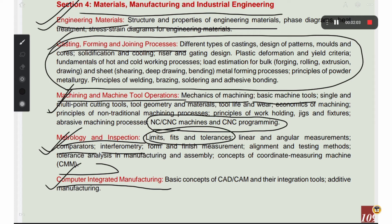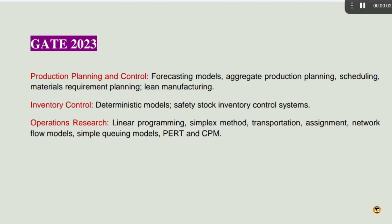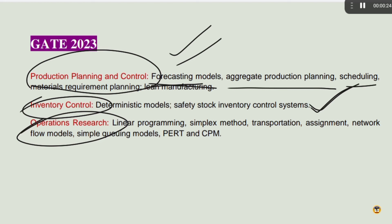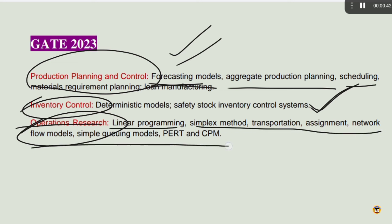To achieve All India Rank 1, you must cover all topics. The final manufacturing topic is production planning and control, and inventory control and operation research. In production planning and control, topics include forecasting models, aggregative models, and planning and scheduling — all very simple. For operation research, topics include linear programming, simplex method, and transportation — four models in total. If you master these four models, you can score at least 2 marks.